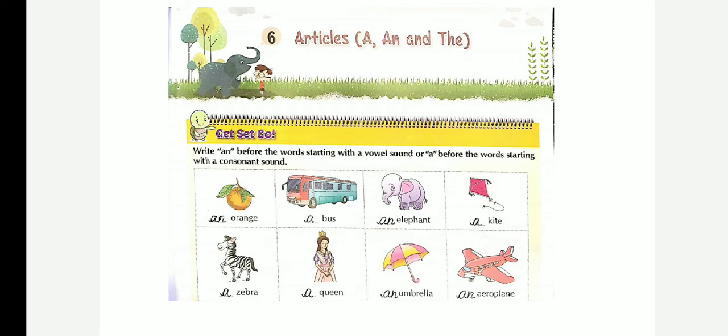Hello Learners, today we will do revision of Chapter 6: Articles A, An, and The. See the first exercise. Write 'an' before the word starting with a vowel sound or 'a' before the word starting with a consonant sound.